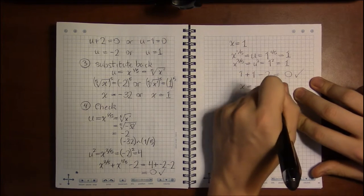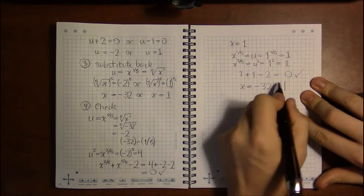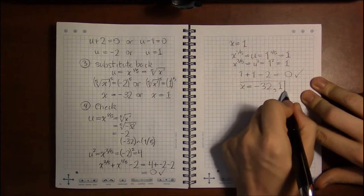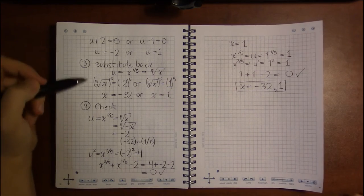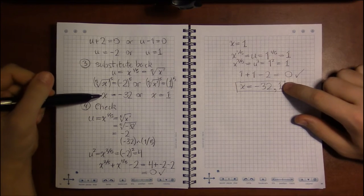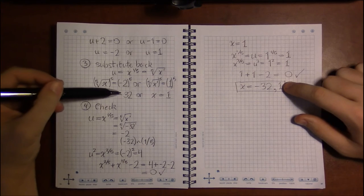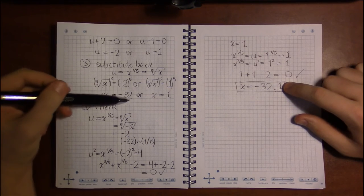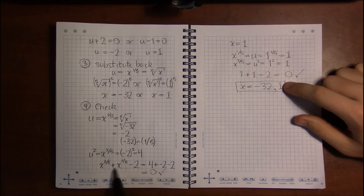Both solutions were absolutely correct. But unfortunately, you do have to go through this process of checking, because it's possible you could end up with a problem that does have what we call extraneous solutions, where you come down to a solution, or what looks like a solution, but doesn't end up being a solution to the original problem.